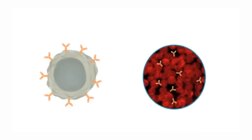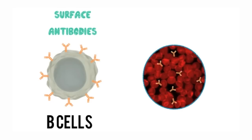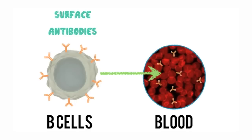There are two types of antibodies according to where you find them. On the left, you have B cells. B cells usually produce antibodies and have them on their surface — those are called surface antibodies. Once these B cells decide to secrete these antibodies into your bloodstream, you start calling them secreted antibodies. Scientists are quite original when it comes to naming — we wanted to keep it simple.